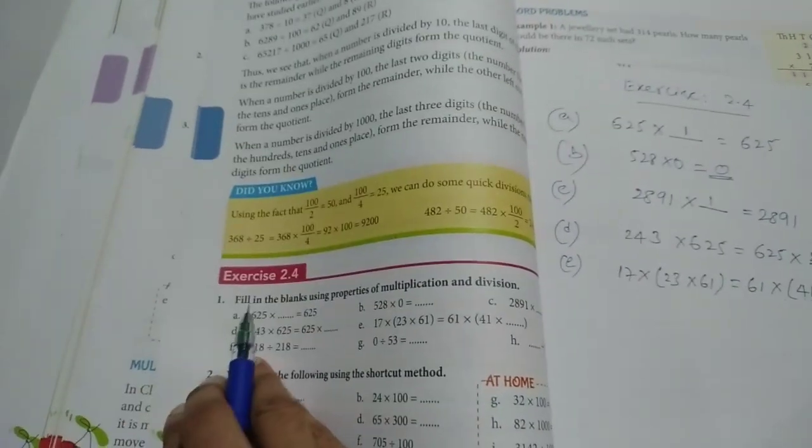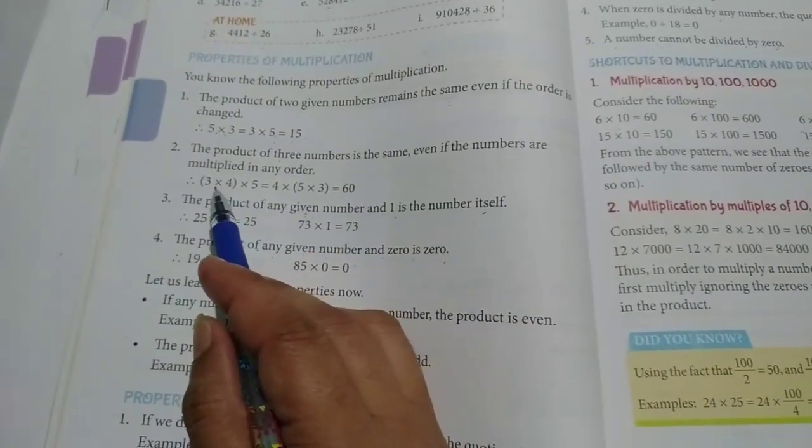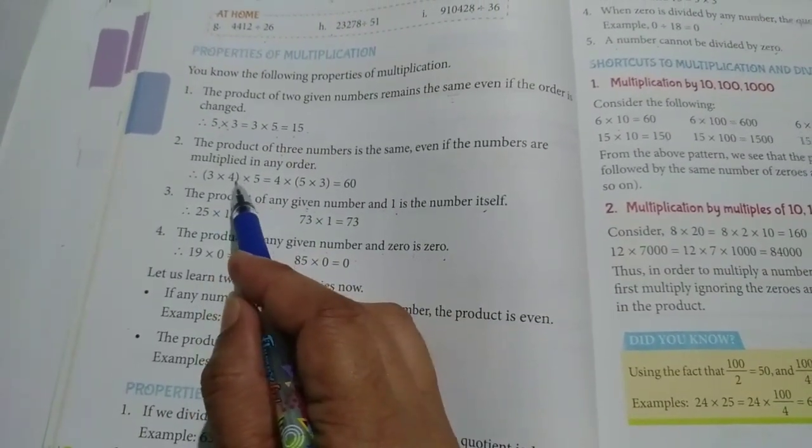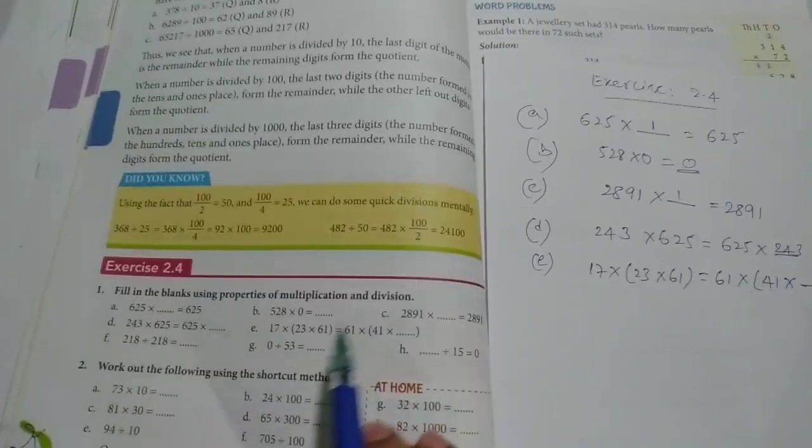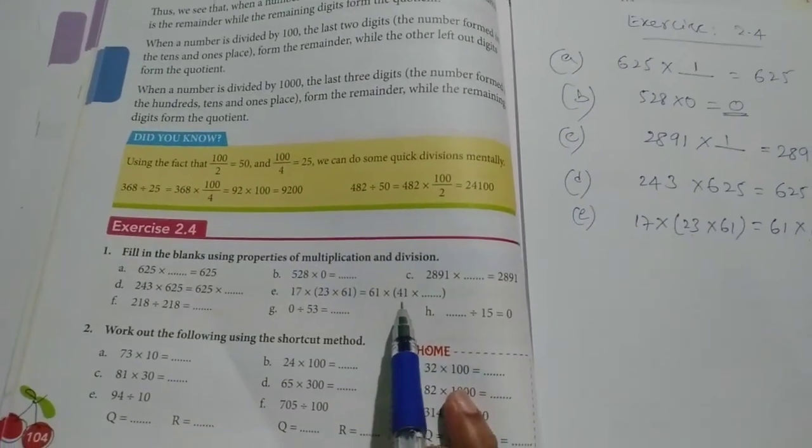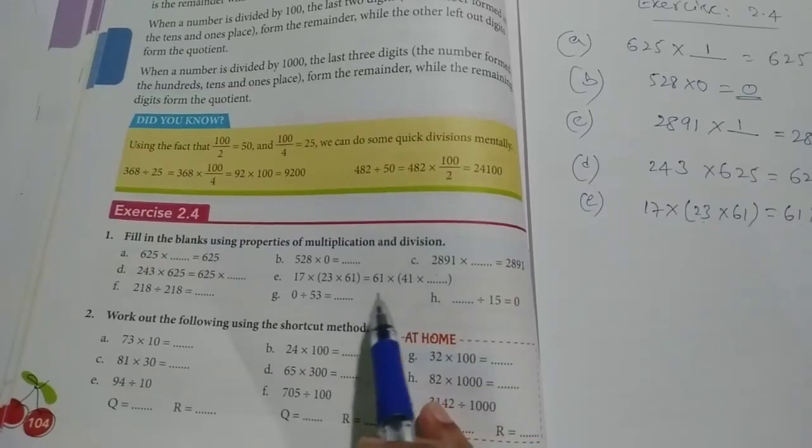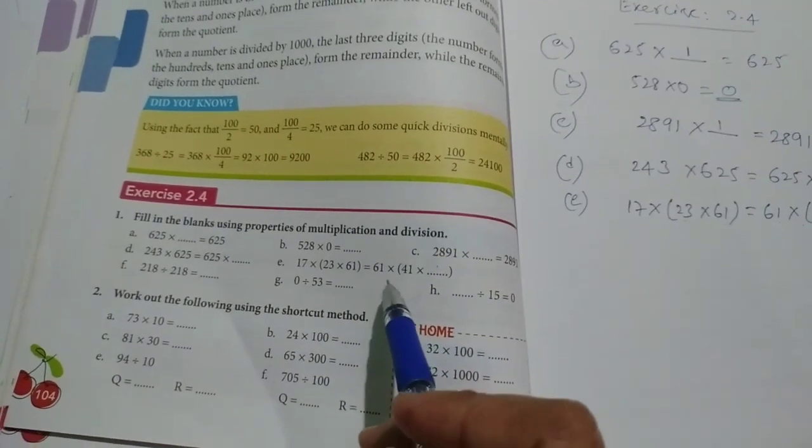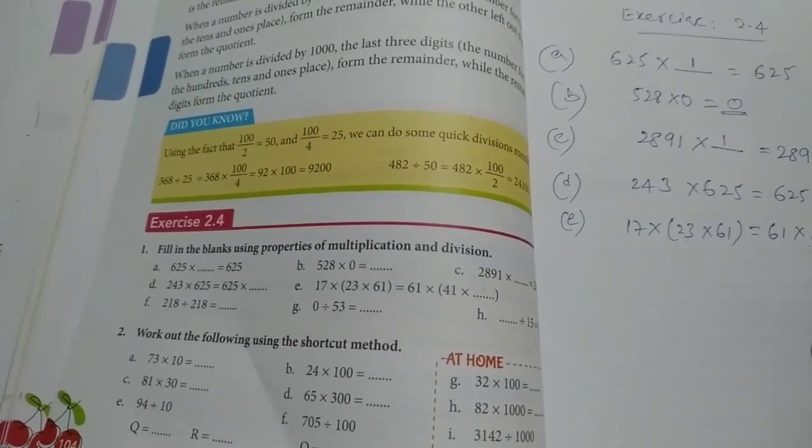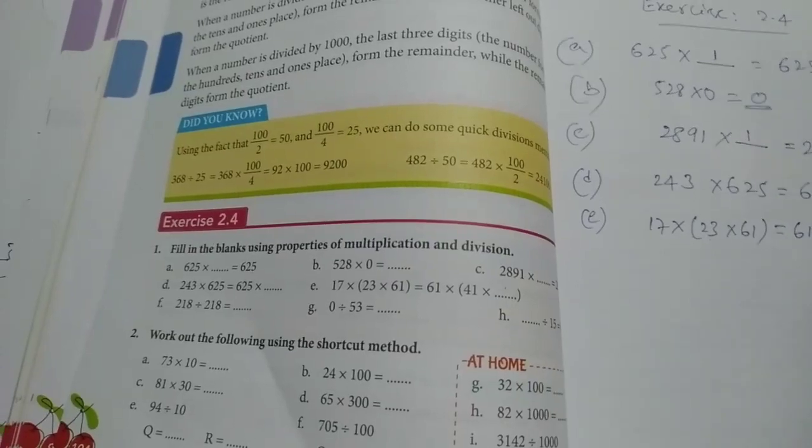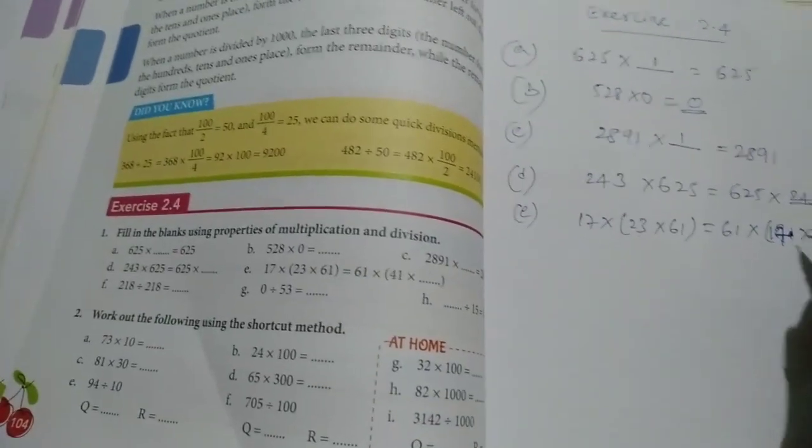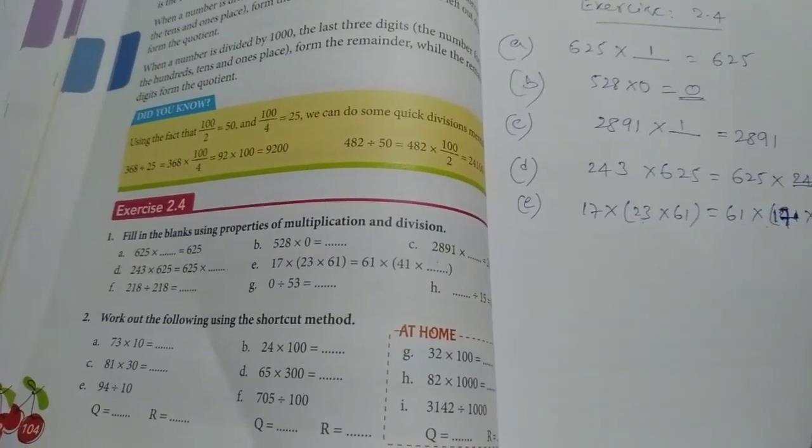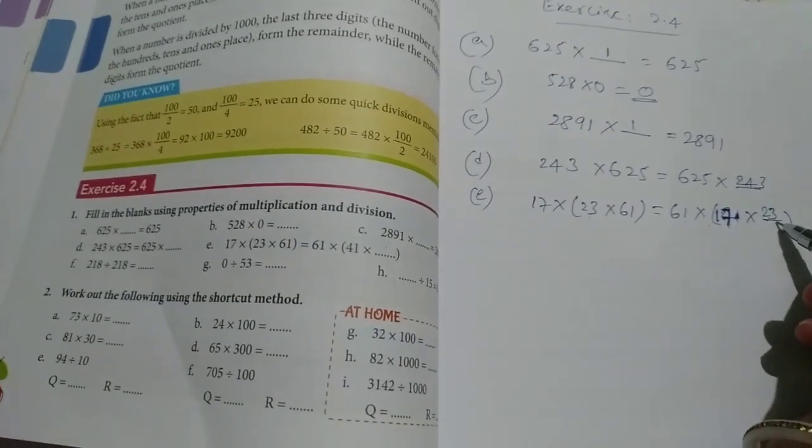Now this property was there - see here, 3 into 4 into 5 is equal to 4 into 5 into 3. So this number only should be there, but here I think there's a misprint. Something is wrong in this problem. Did you understand? You leave this. I will ask you to change this number. Instead of this 41, you better change to 17. Write 17. 61 into, 17 into what is remaining? 23. What is remaining? 23.